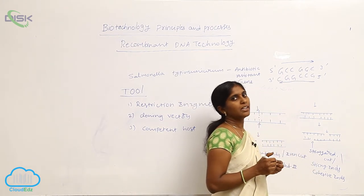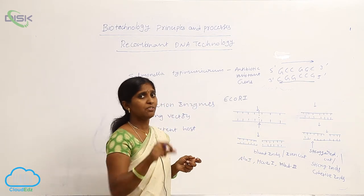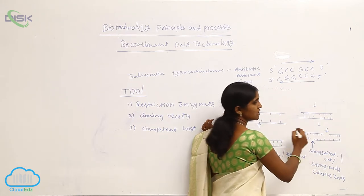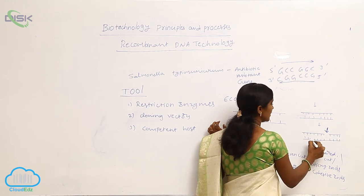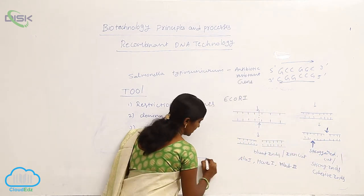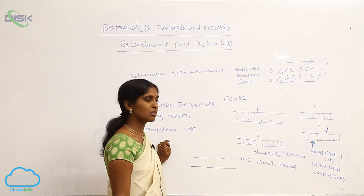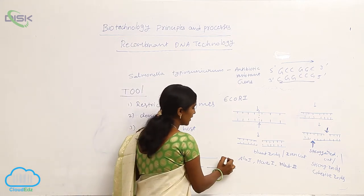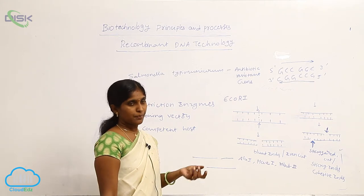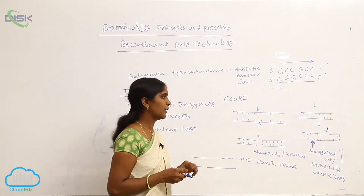There are also staggered ends. During staggered cutting, the cut does not occur at the same position on both strands — the recognition sites on the two strands are at two different locations, so cuts occur at two different levels. This produces sticky ends, also called cohesive ends. Staggered ends have the ability to rejoin, making them the ideal cuts for rDNA technology for integration of desired DNA.